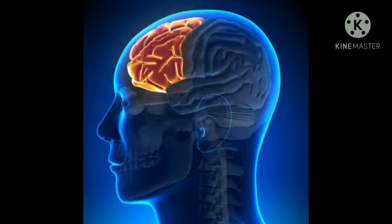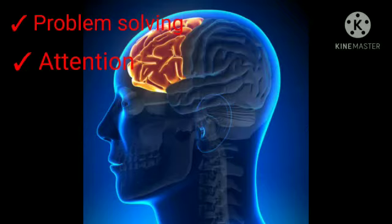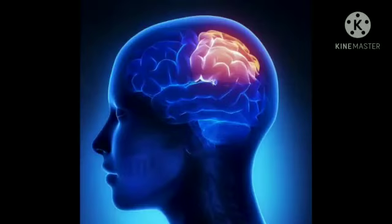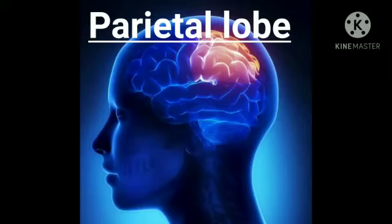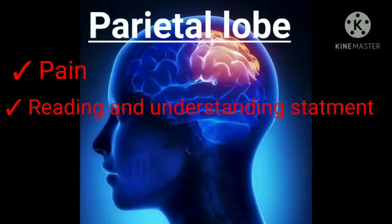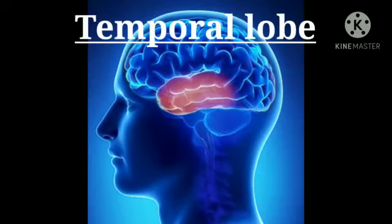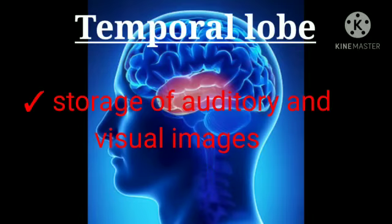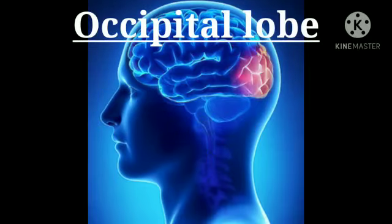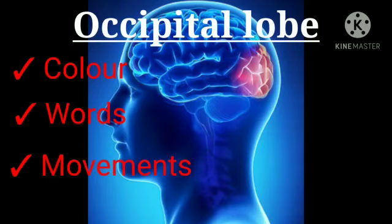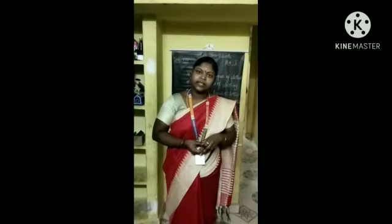The frontal lobe controls problem solving, attention, judgment, and behavior. The parietal lobe controls the senses like pain, reading, and understanding statements. The temporal lobe stores memory in the brain as visual and auditory images. The fourth, occipital lobe, is responsible for recognition of colors, words, and movements. Thank you, children.